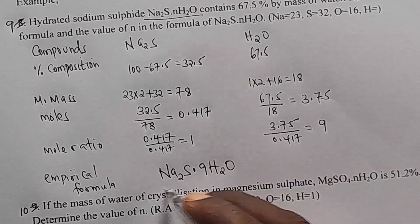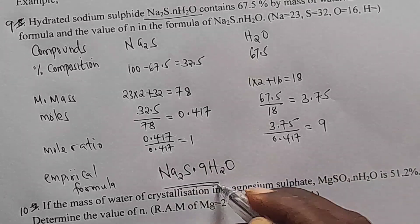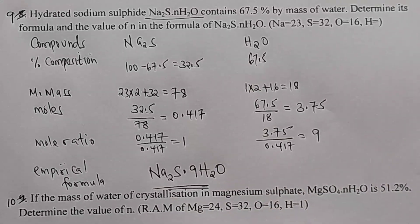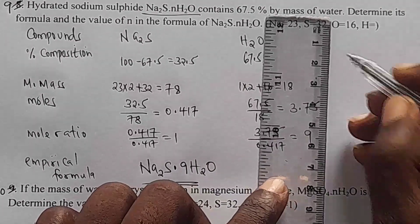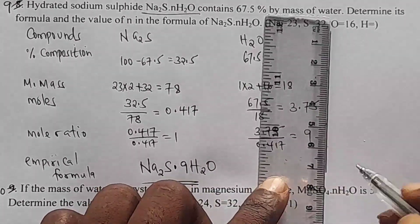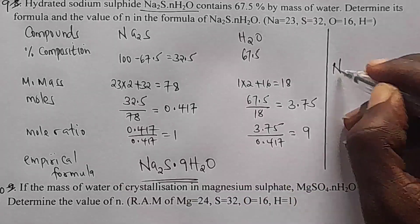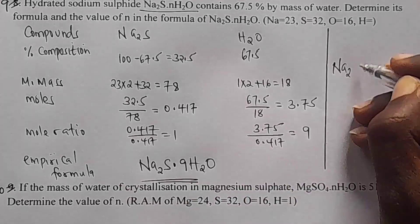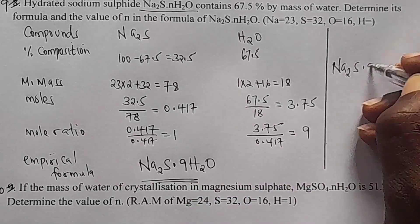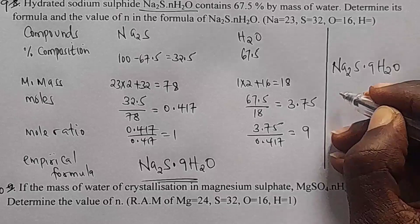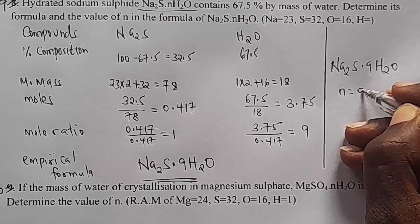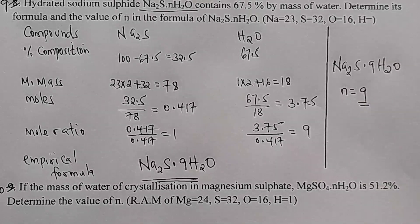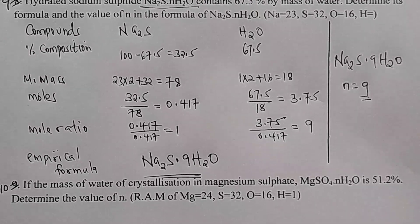This is the empirical formula. We are told to calculate the value of n. If we have Na₂S·9H₂O, then n is equal to 9. The value of n is 9. Now number 10.